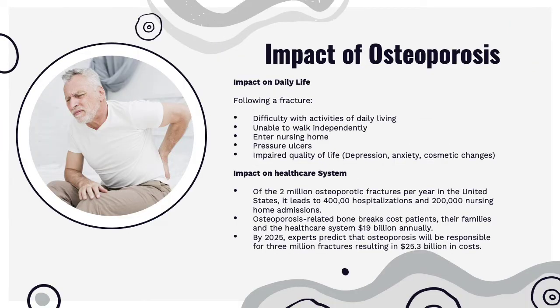The most prevalent sites for osteoporotic fractures are the hip and spine. When one of these fractures occurs, it can really impact daily life — difficulty with activities like getting out of bed, getting dressed, taking showers, cooking, and walking independently. That's why so many individuals enter nursing homes after their first osteoporotic fracture. Of the 2 million osteoporotic fractures per year in the US, there are 400,000 hospitalizations and 200,000 nursing home admissions, costing patients, families, and the healthcare system $19 billion annually — a number only expected to grow by 2025.